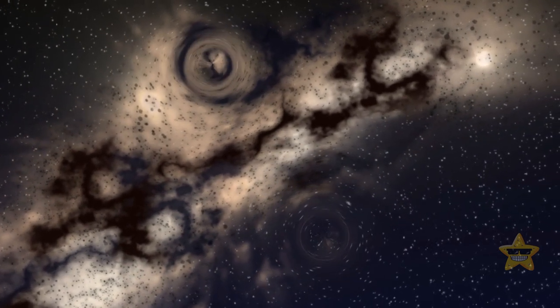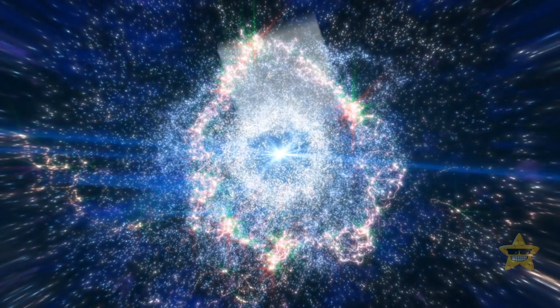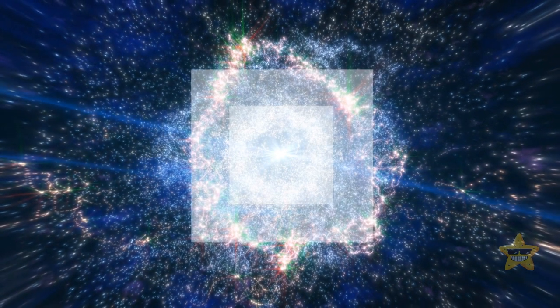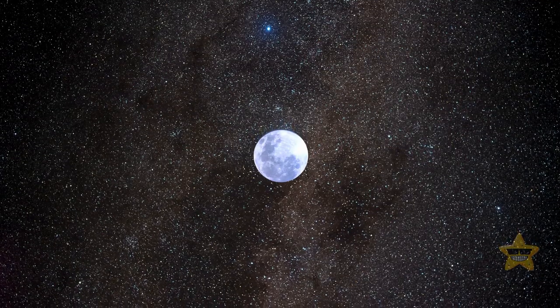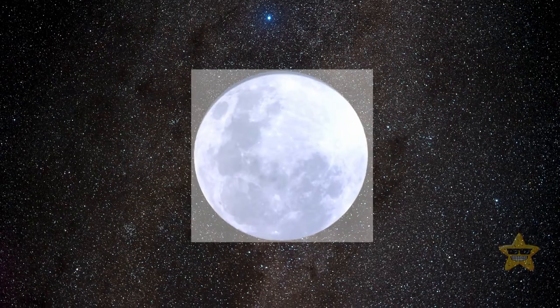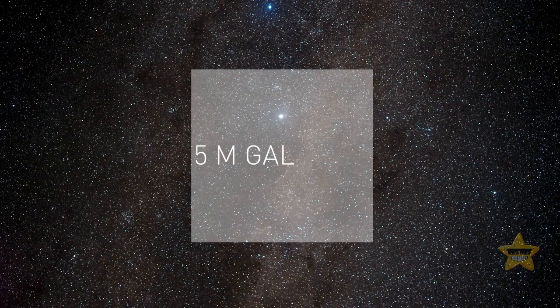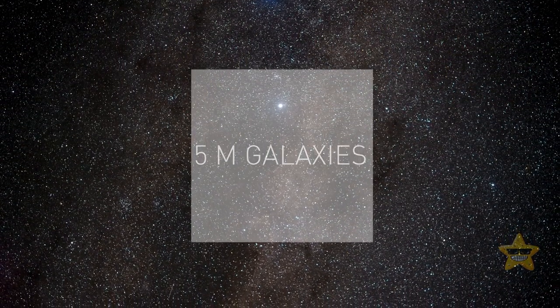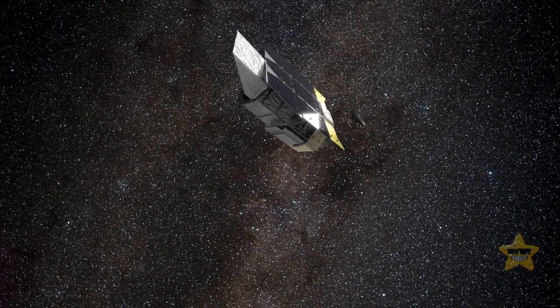So, scientists created a simulation based on what we currently know about how galaxies form. It shows a patch of the sky that is like 10 times the size of a full moon and contains more than 5 million galaxies.